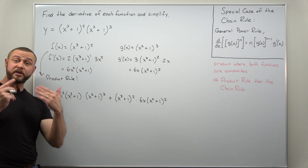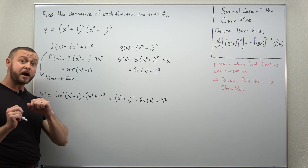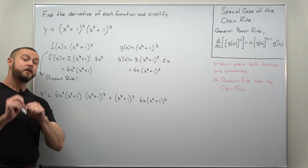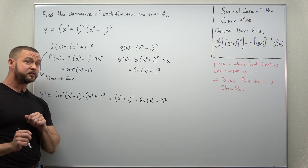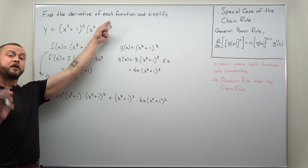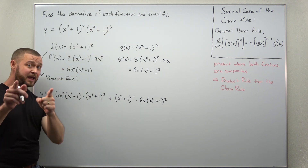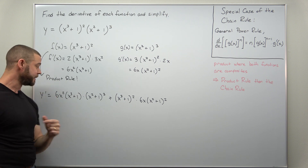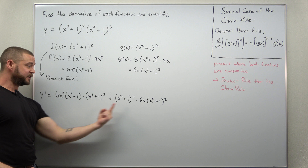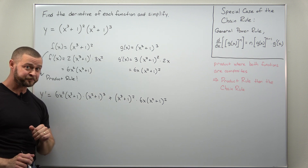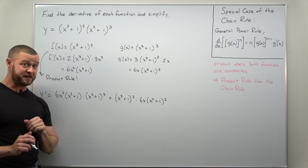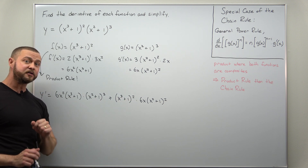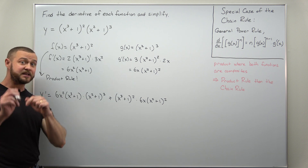At this point we're basically done calculating the derivative — we've applied the product rule and the chain rule. But in calculus one you're typically expected to simplify, and we can actually simplify this considerably. One thing you do not want to do is multiply all of that out. It's not wrong, but it's not going to be fun.